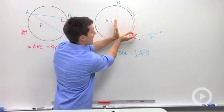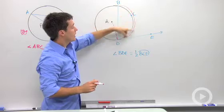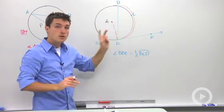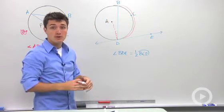So this angle right here will be half of that arc BCD. So two key things that you're going to use when you're trying to solve for missing angles.